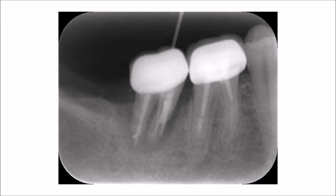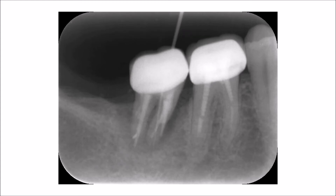You can also see a gutta percha point that extends from the crown downwards the full length of the root — this is not a root canal filling. The gutta percha cone extends all the way down to the apex of the tooth. If we imagine this gutta percha was not present, we might think this periapical radiolucency was caused by improperly filled root canals.